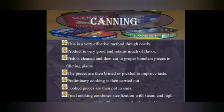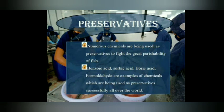Canning is a very efficient preservation method that retains flavors and nutritional value. Fish are cleaned, cut, and sterilized using variable steam and heating methodologies. Chemical preservatives — including benzoic acid, sorbic acid, boric acid, and formaldehydes — are also used in fish and food processing industries worldwide.